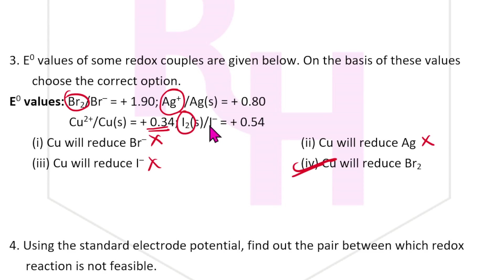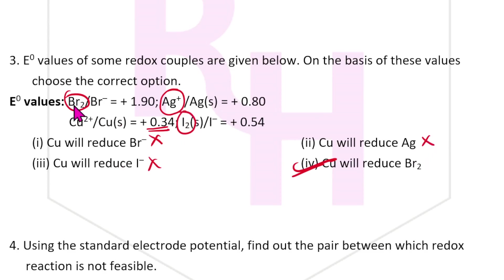Cu will reduce I⁻ — that is not possible, not feasible. Ag⁺ giving is not possible. Br2 becoming Br⁻ with Ag⁺ is also not possible. So the answer for this question is the fourth option.